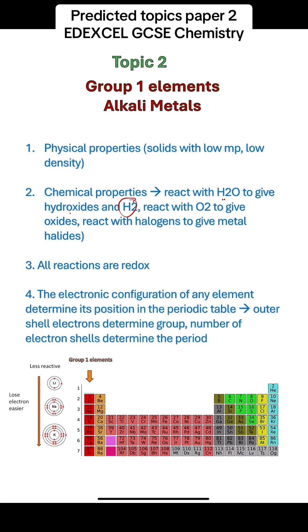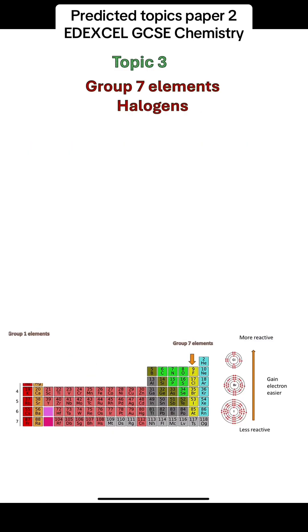Remember that the electronic configuration of any element determines its position in the periodic table. The number of outer shell electrons determines the group, and the number of electron shells determines the period.